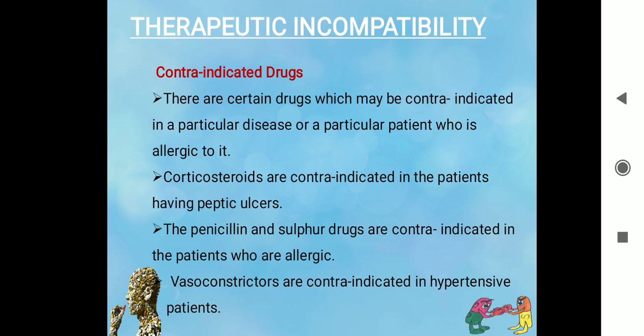The next reason is contraindicated drugs. Many drugs may be contraindicated in a particular disease or for a patient who is allergic to them. For example, corticosteroids are contraindicated in patients with peptic ulcer. Penicillin and sulfa-containing drugs are contraindicated in patients who are allergic to them. Vasoconstrictors are contraindicated in hypertension, because in hypertension blood pressure in the vessels is already elevated — if vasoconstrictors are given, vessels will constrict and blood pressure will spike further, producing fatal effects. We must follow the instructions given by physicians in such cases.